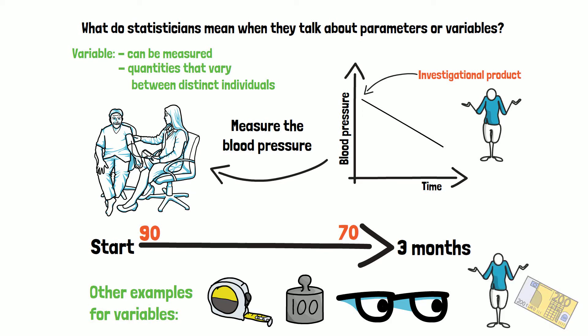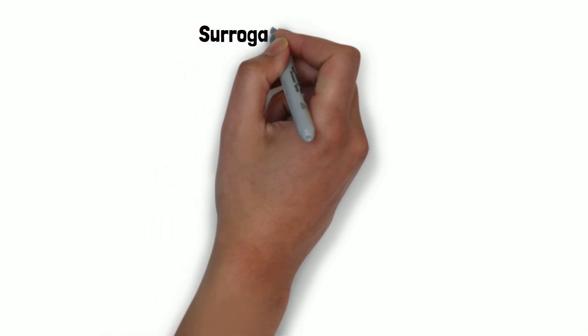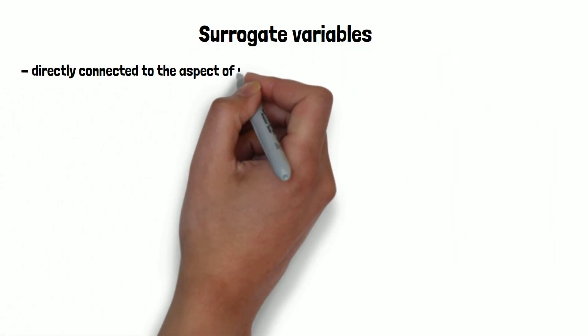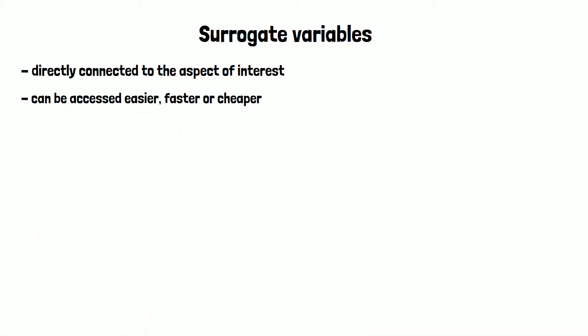Sometimes it is not possible or too costly to obtain the variable of interest directly. This is when so-called surrogate variables come into play. These are variables that are directly connected to the aspect of interest but can be accessed easier, faster or cheaper.